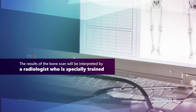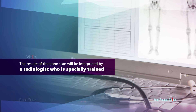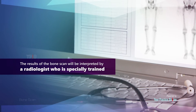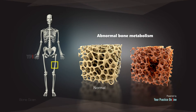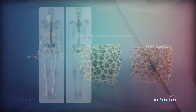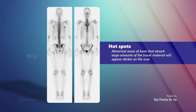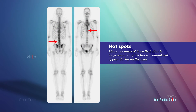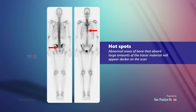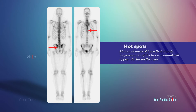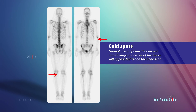The results of the bone scan will be interpreted by a radiologist who is specially trained to look for signs of abnormal bone metabolism. Abnormal areas of bone that absorb large amounts of the tracer material will appear darker on the scan and are known as hot spots. Normal areas of bone that do not absorb large quantities of the tracer will appear lighter on the bone scan and are known as cold spots.